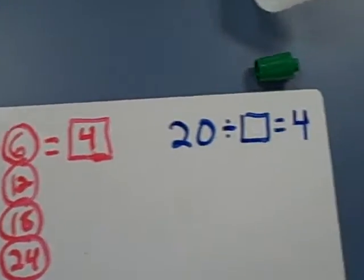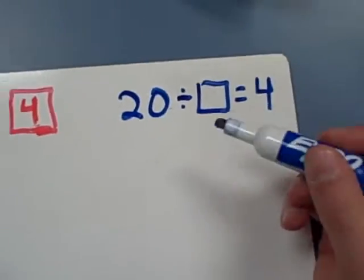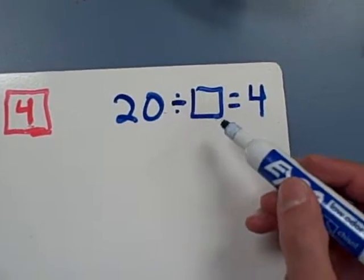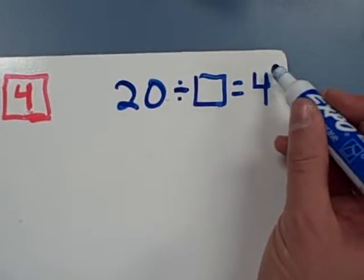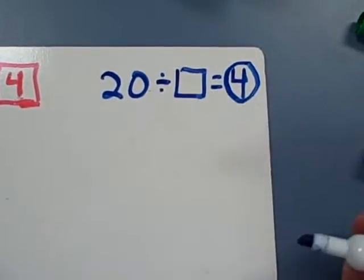Let's try this one. Twenty divided by blank equals four. Again, 20 is your dividend, and you're dividing by an unknown divisor to find four. Well, I can turn that around and say how many groups of four go into 20.